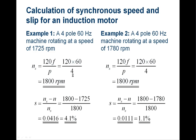Therefore, the slip is (1800 − 1725) / 1800 = 0.0416, which is roughly 4.1%.